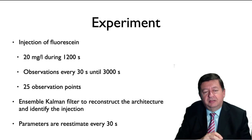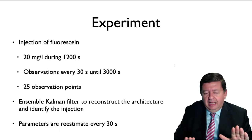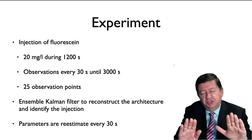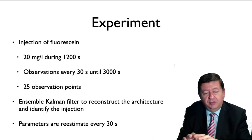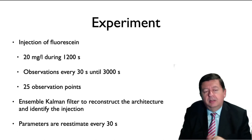The Ensemble Kalman filter works by running a model in parallel. You have a numerical conceptual model that you have built, and your observations. Every 30 seconds you stop, take observations, compare the observations with the predictions of the model, and then correct your model depending on how well you are making the predictions.